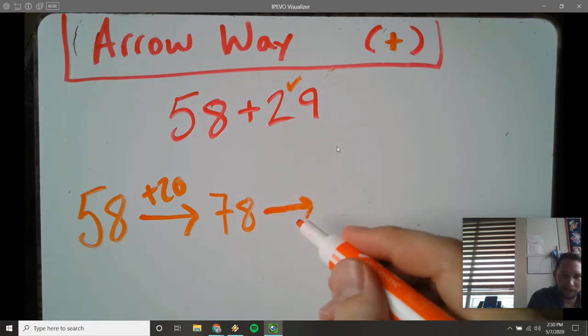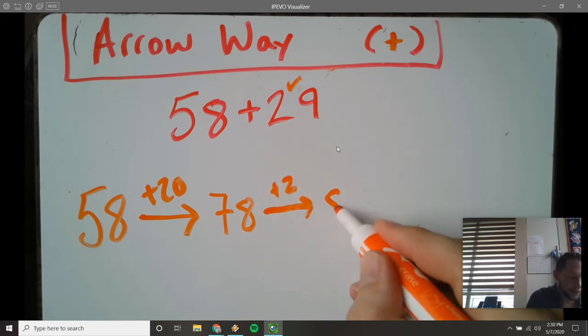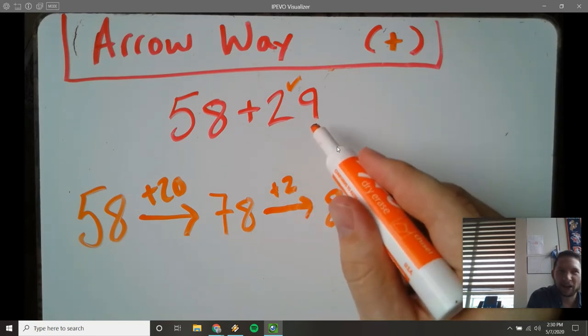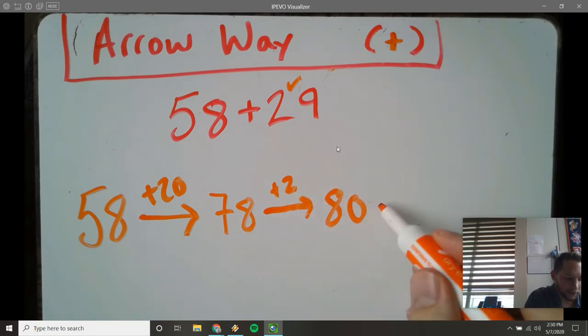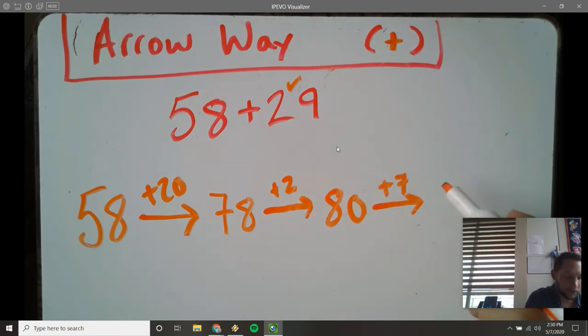And now my ones, I need to add 9. Now for me, knowing my number bonds, I would try and get to the nearest 10. It would be easier for me, so I would add 2 to get to 80. So far I've added 2, but I need to add 9, so I need to add 7 more because 7 and 2 is 9. That's how much I have to add. It would be 87. So that's our answer.